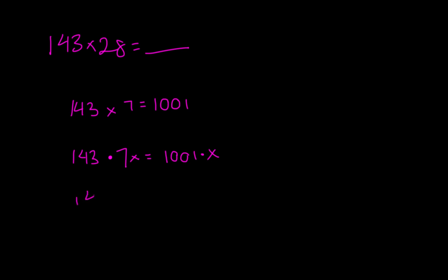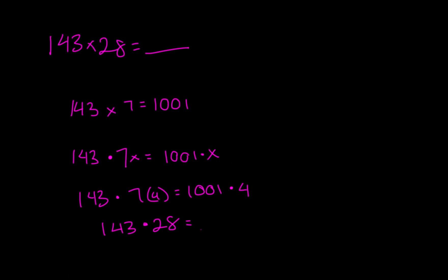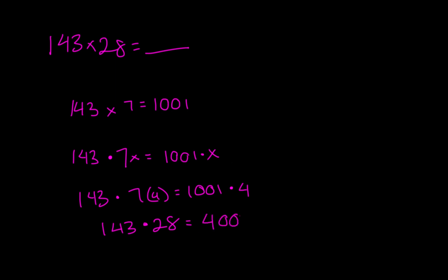So in other words, 143 times 7 times 4, for 28, is really equal to 1001 times 4. So 143 times 28 is equal to 4,004. The short form of this trick is just divide the multiple of 7 by 7 and then multiply by 1001.